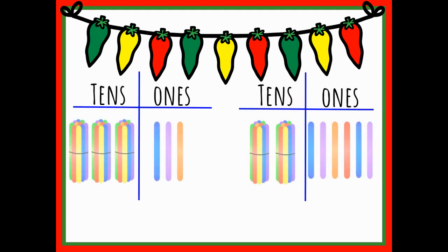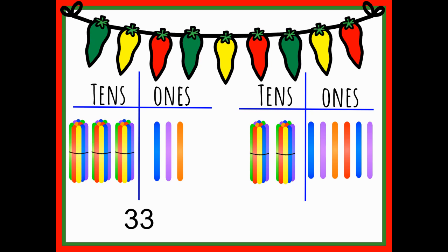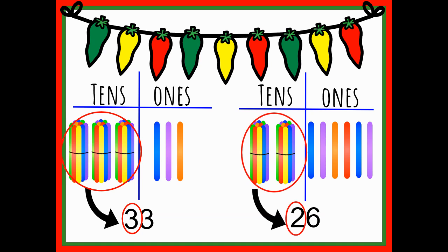Let's try another one. On the left, I have three groups of 10 and three ones, and on the right, I have two groups of 10 and six ones. Again, I'm going to focus on the tens. On the number 33, I see I have three groups of 10, and on the number 26, I only have two groups of 10. I know that 30 is greater than 20. Therefore, I know that 33 is my greater number, and 26 is less.